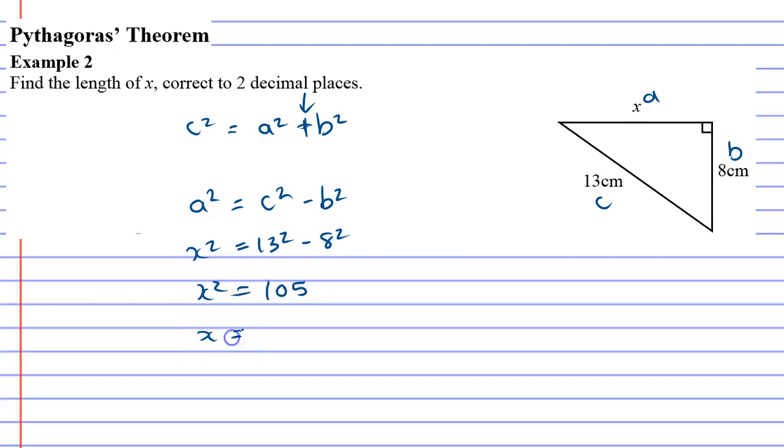And we don't want x². We want to find what x is, which means we have to square root 105. And the square root of 105 to two decimal places, when I round it, is 10.25 centimeters.